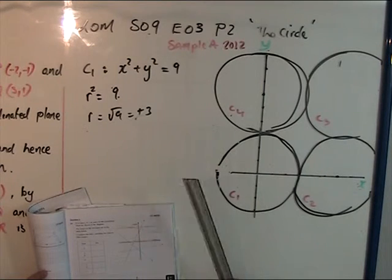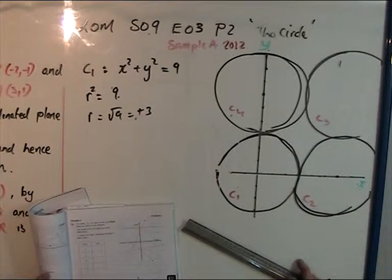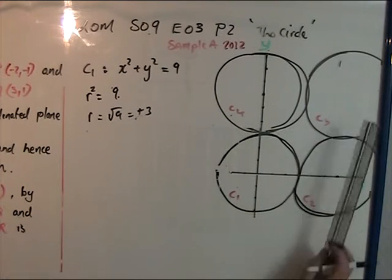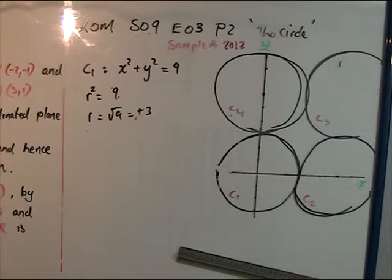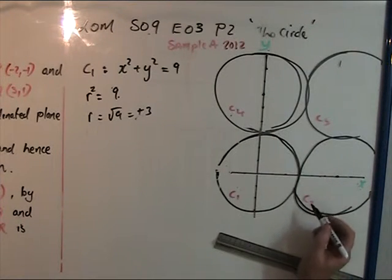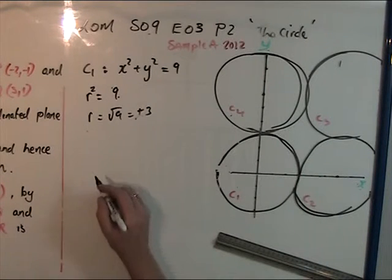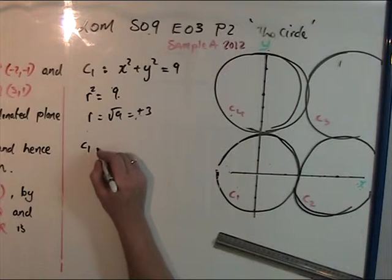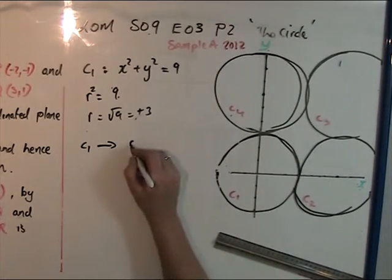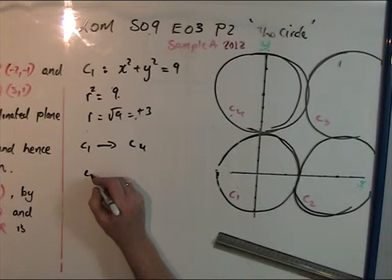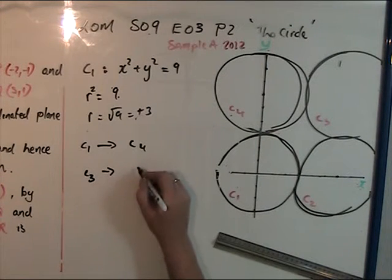Next part asks to write down the coordinates of the center of C3. They all follow a format - they're translated. Starting from center (0,0), I'll follow the same translation. Going from C1 to C4, then from C2 to C3 using the same method.